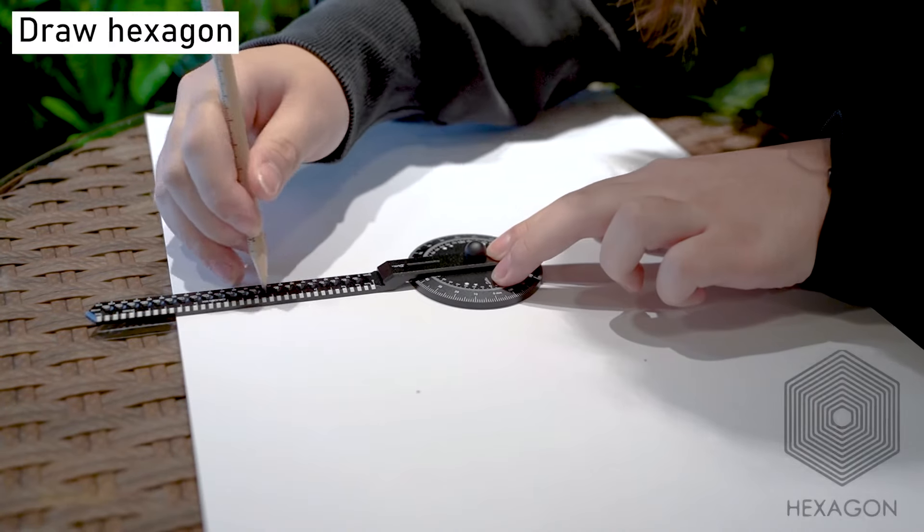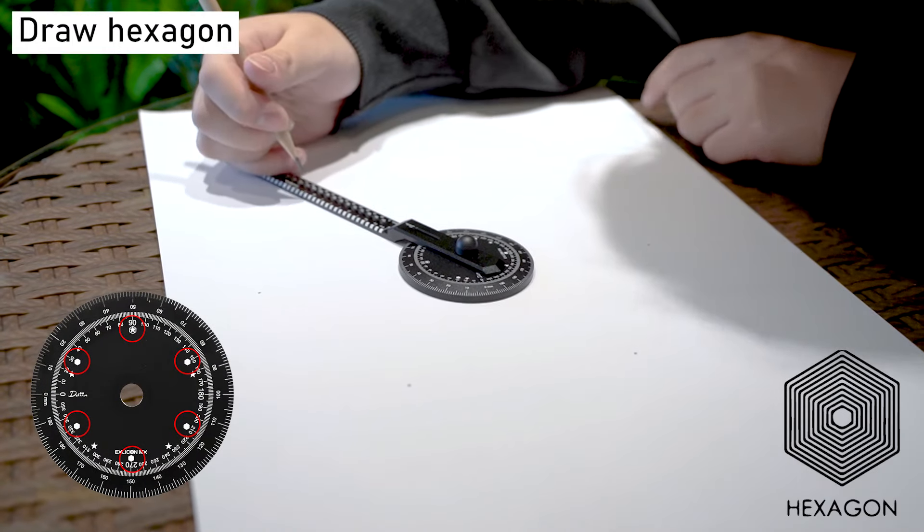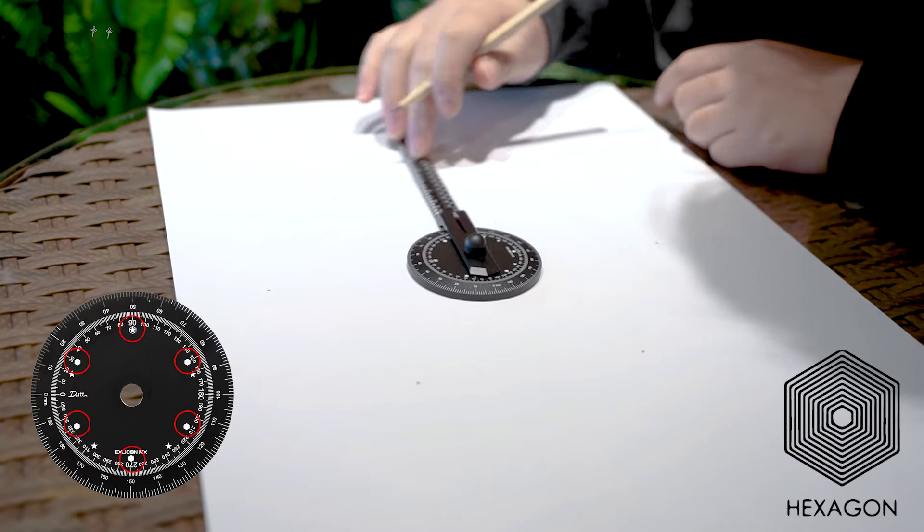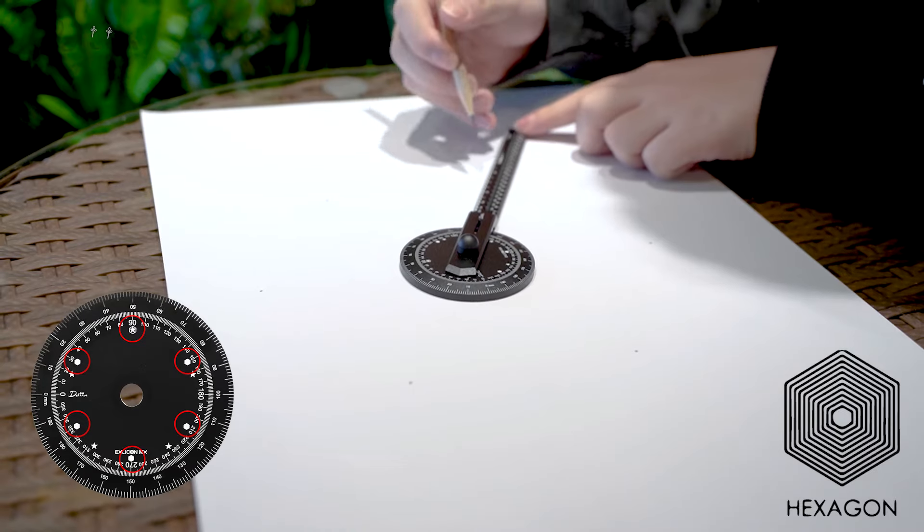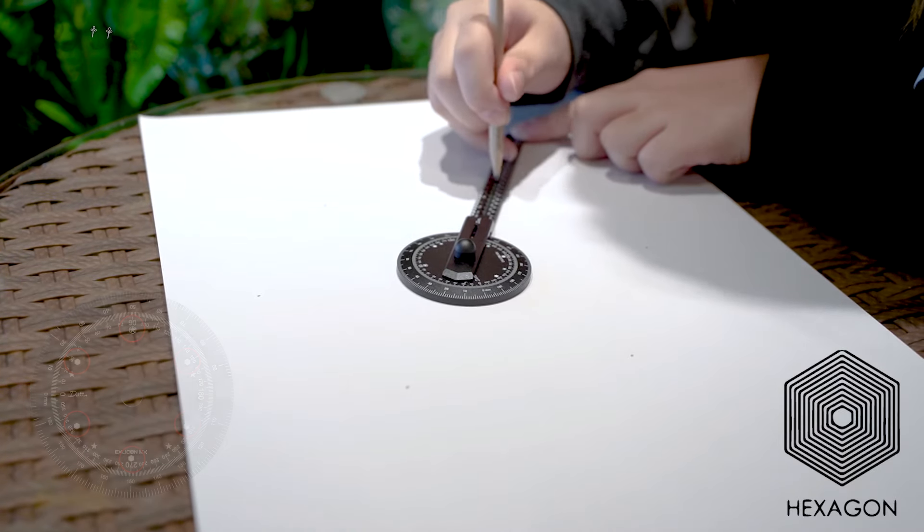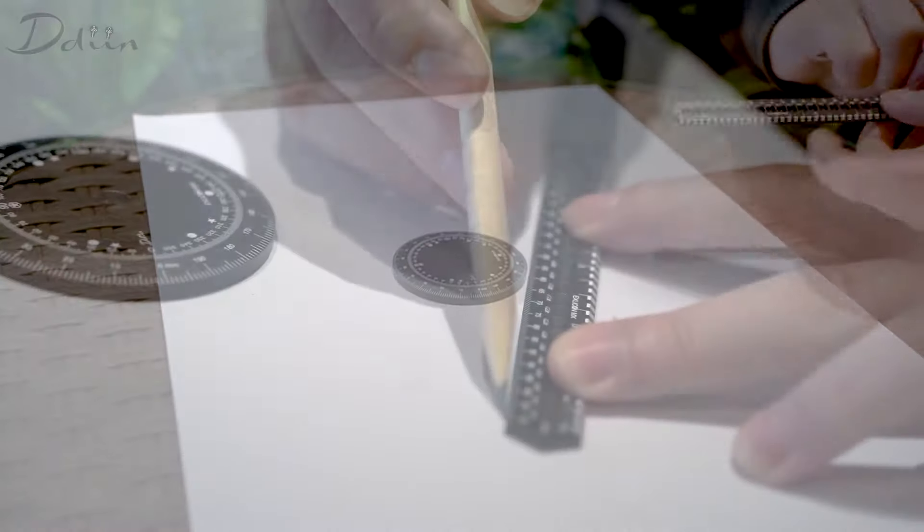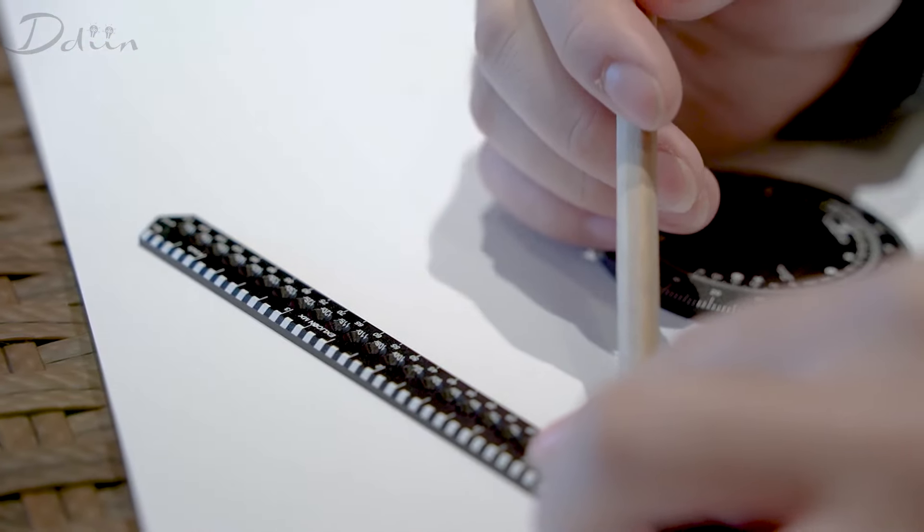To draw a hexagon, locate the hexagon markings on the base and align the pointed tip of the wing to the marking. Mark a point and rotate the wing to the next marking. Repeat until all five points have been marked. Remove the wing and the base from the surface. Grab the long wing and connect the points to form a hexagon.